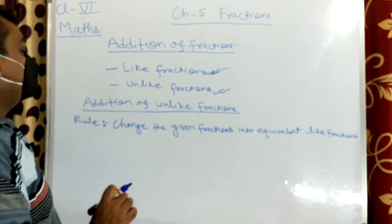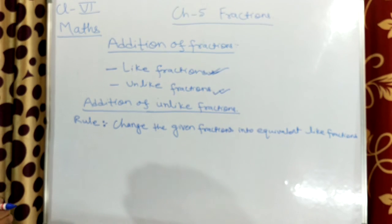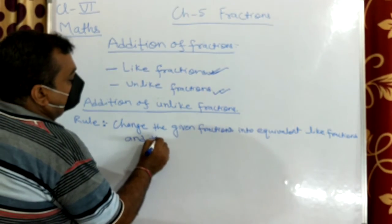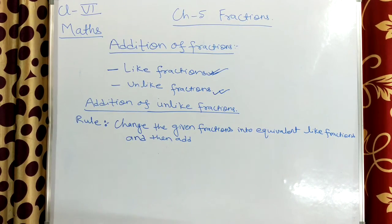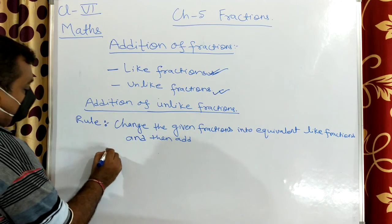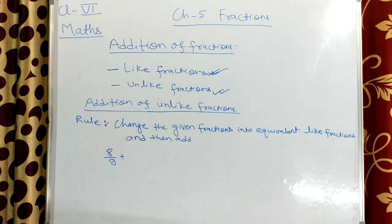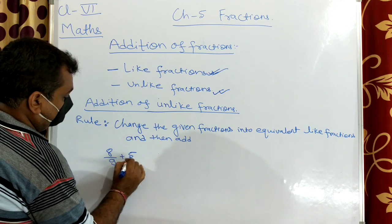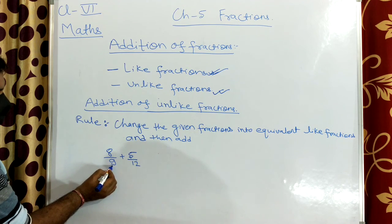Let us take one example: 8 by 9 plus 5 by 12. In this fraction, the first fraction's denominator is 9 and the second fraction's denominator is 12. So first we will find the LCM of these denominators. We will find the LCM of 9 and 12.